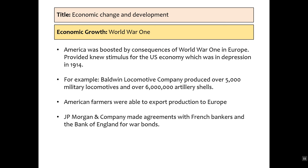World War I significantly changed the American economy as well. America was boosted by the consequences of World War I in Europe — it was a stimulus for the US economy, which was actually in depression by 1914. For example, the Baldwin Locomotive Company produced over 5,500 military locomotives and over 6 million artillery shells. America doesn't join the war until 1917, so this was all being exported to France, Britain, and Russia for profit. American farmers were further able to export produce to Europe as European economies turned towards war rather than agriculture. JP Morgan & Company and other banks entered agreements with French bankers and the Bank of England for war bonds — in fact, America became the sole distributor of war bonds, creating an incentive to fuel one side of World War I.